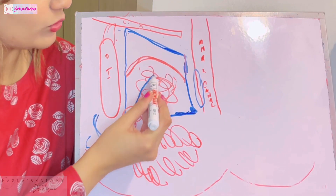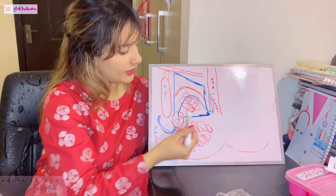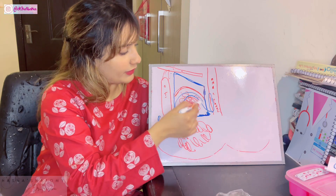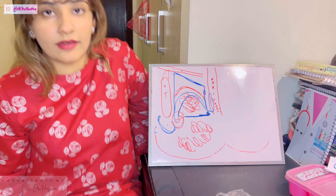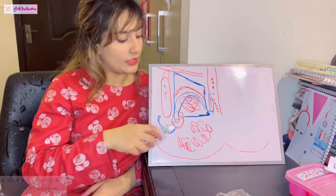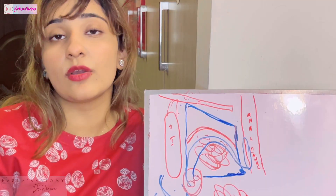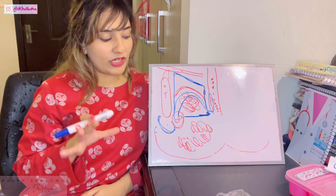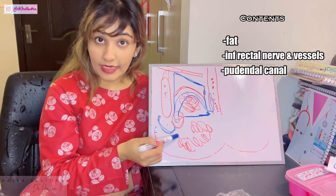In the ischioanal fossa there is an important structure that arches from the pudendal canal. This arching structure is the inferior rectal nerve, and along with it come the inferior rectal vessels. The pudendal nerve and internal pudendal artery lying in the pudendal canal both give off inferior rectal branches, and these arch through the ischioanal space to supply the anal region.